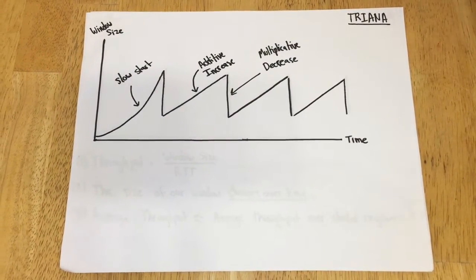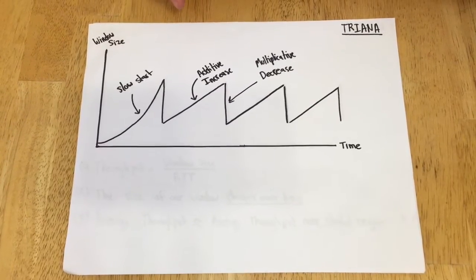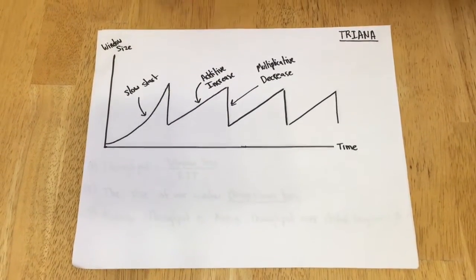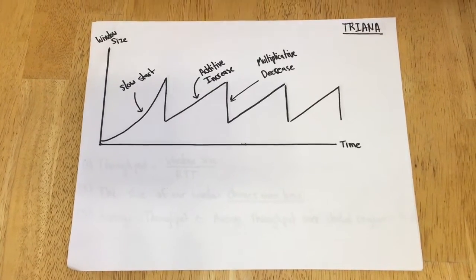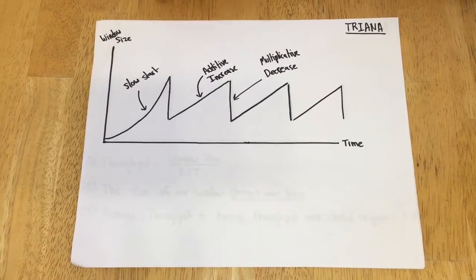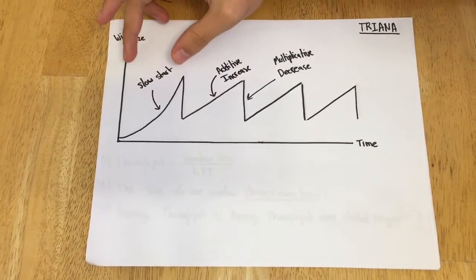Step zero is this graph, which shows window size over time and clearly changes as a result of congestion control. Some things you should be able to identify before we get started are the slow start, which is the exponential increase of window size at the beginning of sending.